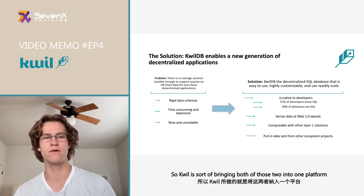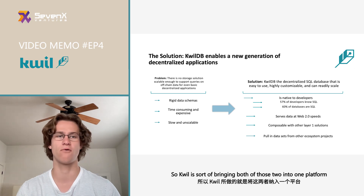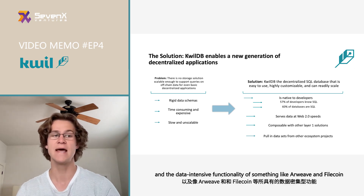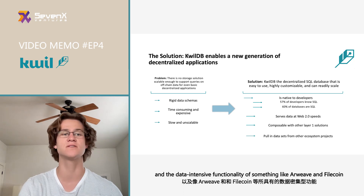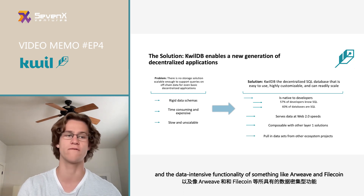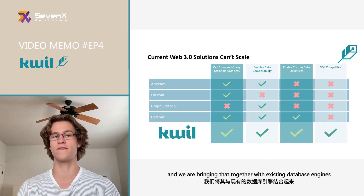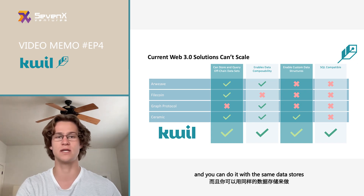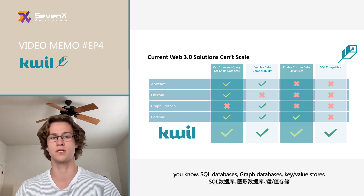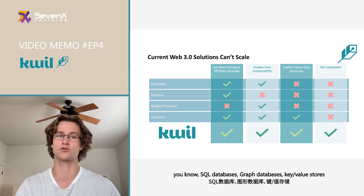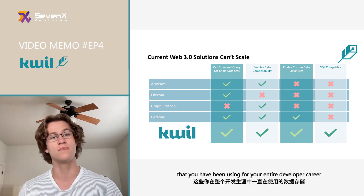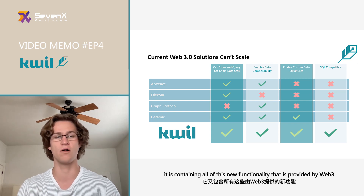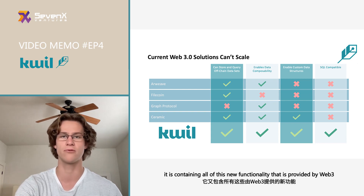Quill brings both of those into one platform, where you can have the permissionless functionality of a smart contract and the data-intensive functionality of something like Arweave or Filecoin, combined with existing database engines. So now you can build all these applications using the same data stores — SQL databases, graph databases, key-value stores — that you've been using throughout your developer career, while also incorporating all this new functionality provided by Web3.